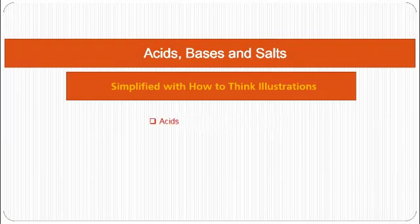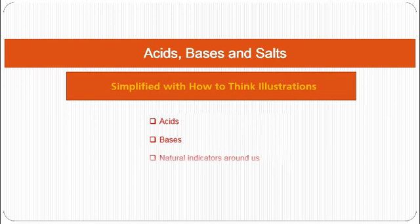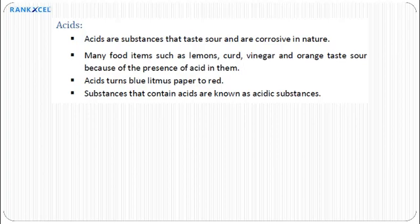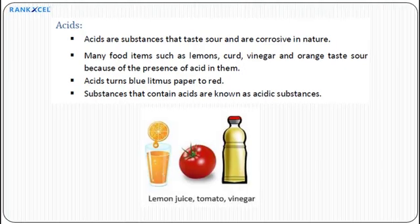The topics covered are acids, natural indicators around us, neutralization, and neutralization in everyday life. Acids are substances that taste sour and are corrosive in nature. Many food items such as lemons, vinegar, and orange taste sour because of the presence of acid in them. Acids turn blue litmus paper to red. Substances that contain acids are known as acidic substances.